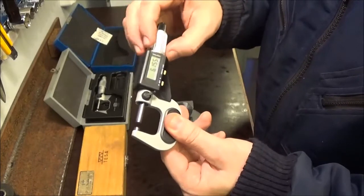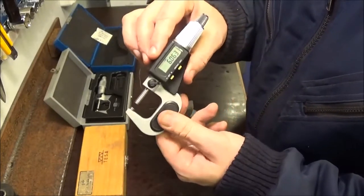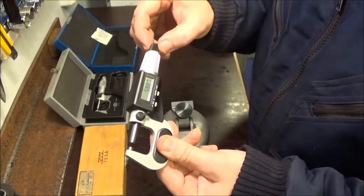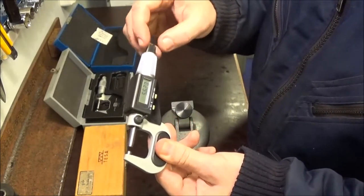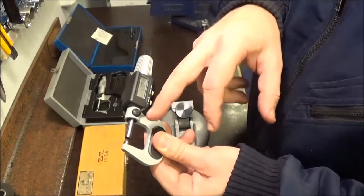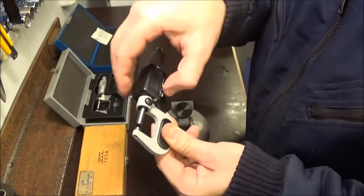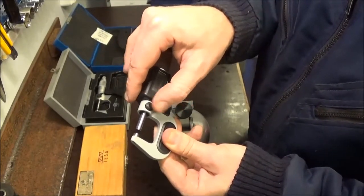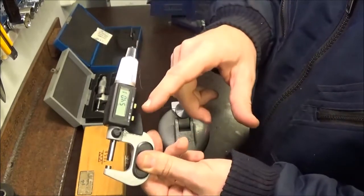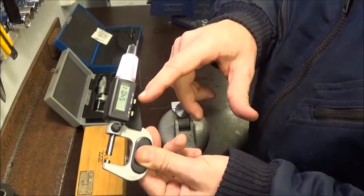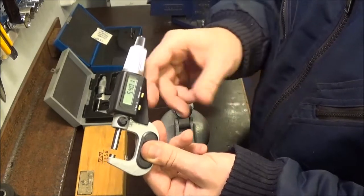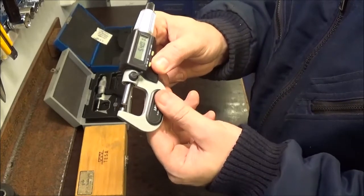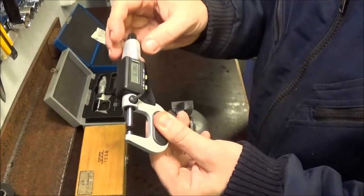This one's IP65 rated, which is fairly standard. You have the clutch here on this barrel. I would have liked to see a metal locking lever instead of this plastic one—I don't know how long it'll last. You can change between metric and imperial units, and there's an ABS setting for absolute measurement, which is quite handy.